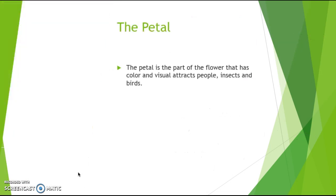The petal is the part of the flower that has the color, and it visually attracts people, insects, birds, and other animals that will help to disperse and create more flowers, essentially.